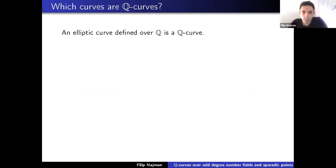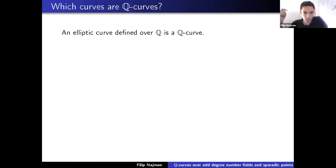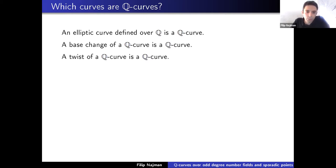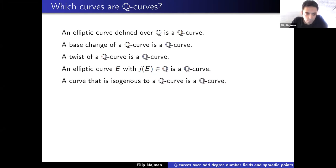What do Q-curves look like? The most basic example is an elliptic curve defined over Q, which is obviously isogenous to all its Galois conjugates and to itself. I like to think of Q-curves as the natural generalization of elliptic curves over Q: an elliptic curve over Q is fixed by the absolute Galois group, while a Q-curve is one whose isogeny class is fixed. A base change of a Q-curve is a Q-curve, a twist of a Q-curve is a Q-curve, so any elliptic curve with a rational J-invariant is a Q-curve. Also, a curve isogenous to a Q-curve is a Q-curve.